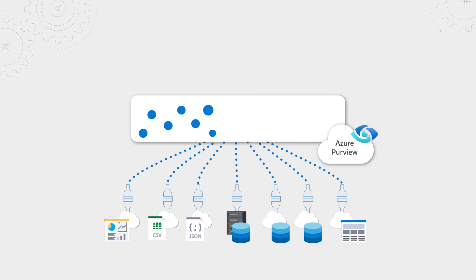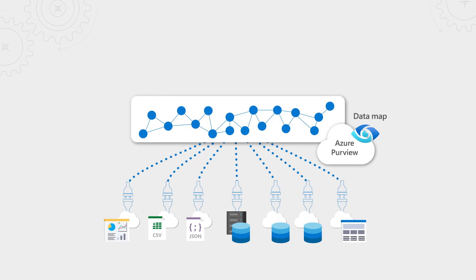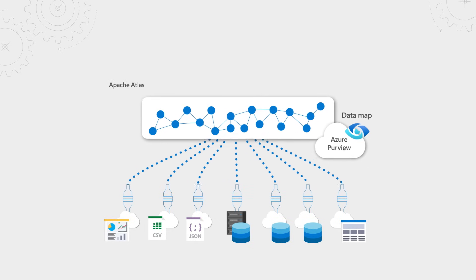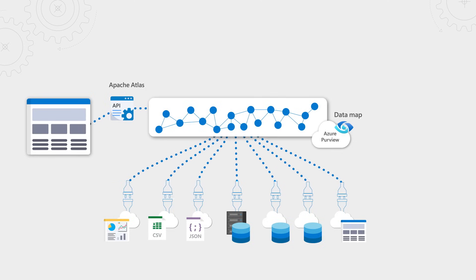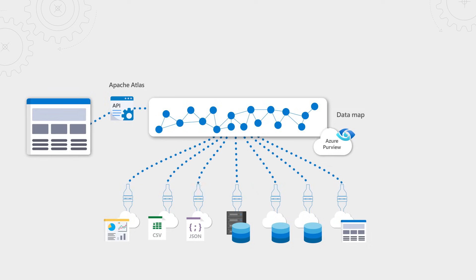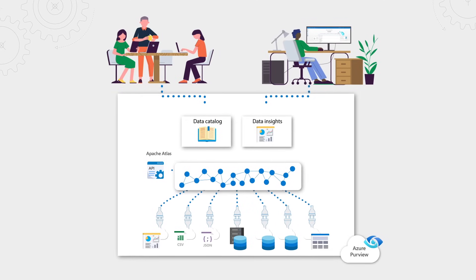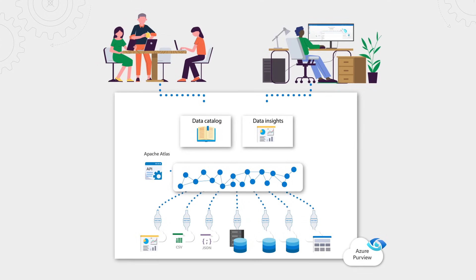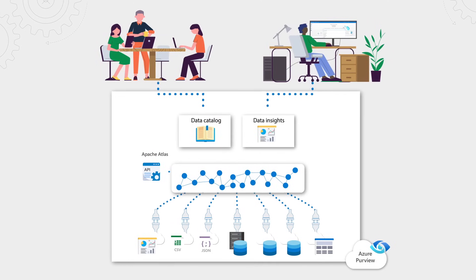All the metadata found during scanning is then published to the Azure Purview data map — an intelligent graph describing all the data across your data state. Because the data map is exposed as Apache Atlas open APIs, you can programmatically push any metadata and lineage from any data system, which is a great way to expand your data map. Once your data map is in place, everyone in your organization can go to the Azure Purview data catalog experience and easily search and browse for data. Your chief data officers can get end-to-end insights across the data estate using the insights experiences which are also provided.